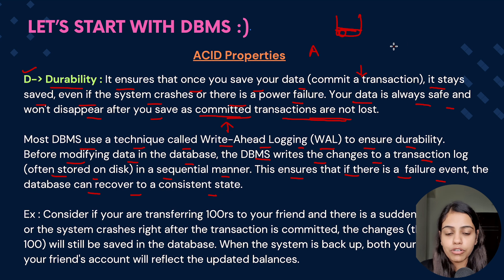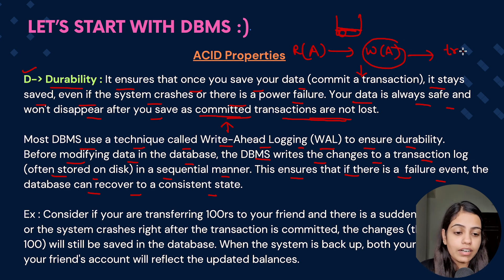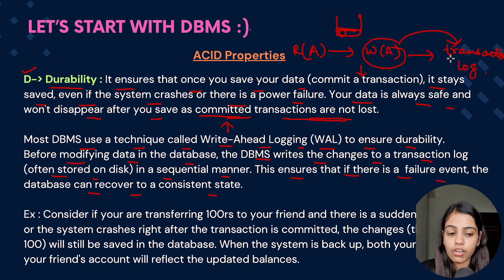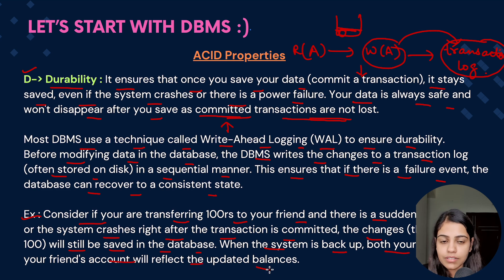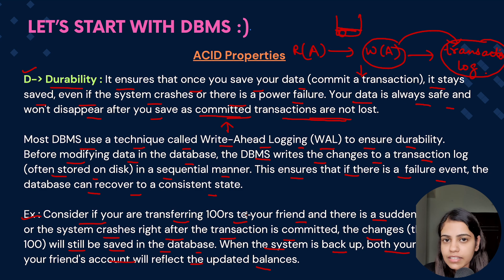When A transfers an amount to B, A fetches the current value, performs arithmetic, then updates — once A updates its value, this is saved in the transaction log rather than directly into the database. The transaction log is deleted once a commit is encountered, and using this log we can recover the DBMS to a consistent state. For example, if you transfer 100 rupees to your friend and there's a sudden power outage right after the commit, the transfer will still be saved when the system comes back up.